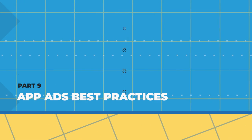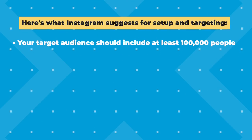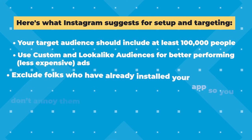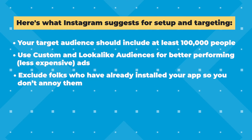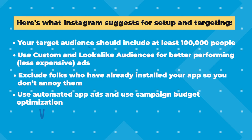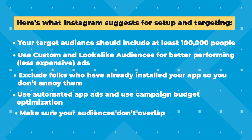Let's go over app ads best practices so that you can get started running really great app campaigns. In order to run the most effective ads for the best price, you need to follow best practices. Instagram wants you to be successful on the platform so that you keep advertising and keep spending money, so they've shared a bunch of great tips that actually work. Here's what they suggest for your setup and targeting: your target audience should include at least 100,000 people. Use custom and lookalike audiences for better performance and less expensive ads. It's also a good idea to exclude folks who have already downloaded your app or taken the action you're looking for. Make sure your audience doesn't overlap so you're not bidding against yourself, driving up the cost of your own ads.